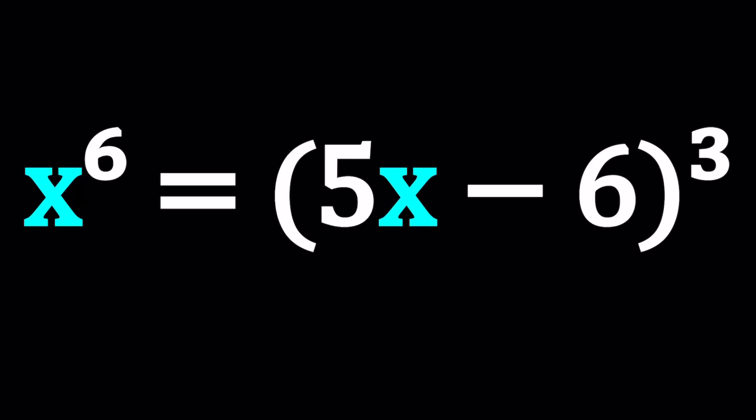Hello everyone. In this video, we're going to be solving a homemade hexic equation. We have x to the power 6 equals the quantity 5x minus 6 to the third power. And I'll be presenting two methods. We're going to be solving for x, obviously. Let's start with the first method.